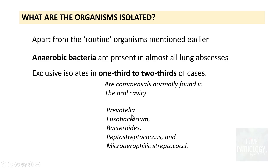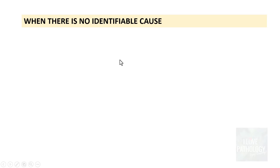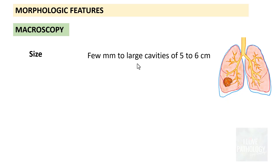Examples of these anaerobic oral organisms include Prevotella, Fusobacterium, Bacteroides, Peptostreptococcus, and Microaerophilic Streptococci, all of which can be seen in lung abscess. Though we have seen many causes, sometimes no cause is found — that is when we call it primary cryptogenic lung abscess.